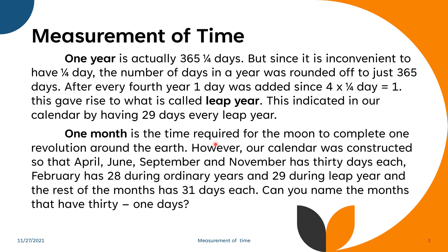One month is the time required for the moon to complete one revolution around the earth. However, our calendar was constructed so that April, June, September, and November has 30 days each. February has 28 during ordinary years and 29 during leap year, and the rest of the months is 31 days each. Can you name the months that have 31 days?